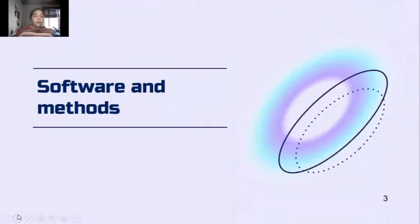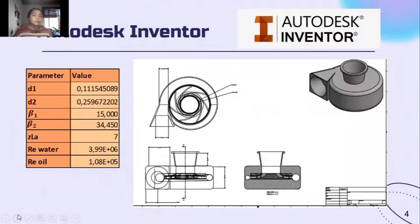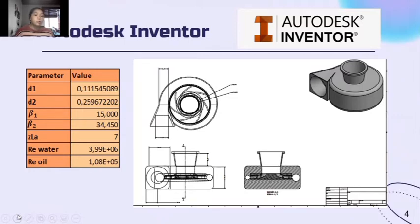The software and methods used in the simulations are going to be shown next. To begin with, we use Autodesk Inventor. Here you can see the parameters and values used to model our pump and some planes of the pump. The Reynolds values for water and for oil are shown at the bottom of the table. We can see that water is turbulent flow because its Reynolds number is higher than 2.5×10⁵, and oil is laminar because it is lower than that reference value.